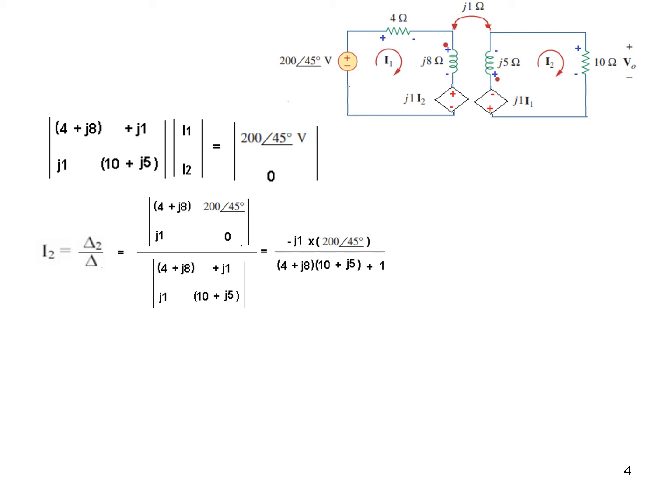And now we can put this directly into our calculator in complex mode, and so we get the answer in one step. It is 1.999 angle minus 135, which can be written as 2 angle minus 135. So we have got I2, and now we can find the output voltage. V0 is 10 times I2, and so the answer is 20 angle minus 135 degrees volts.